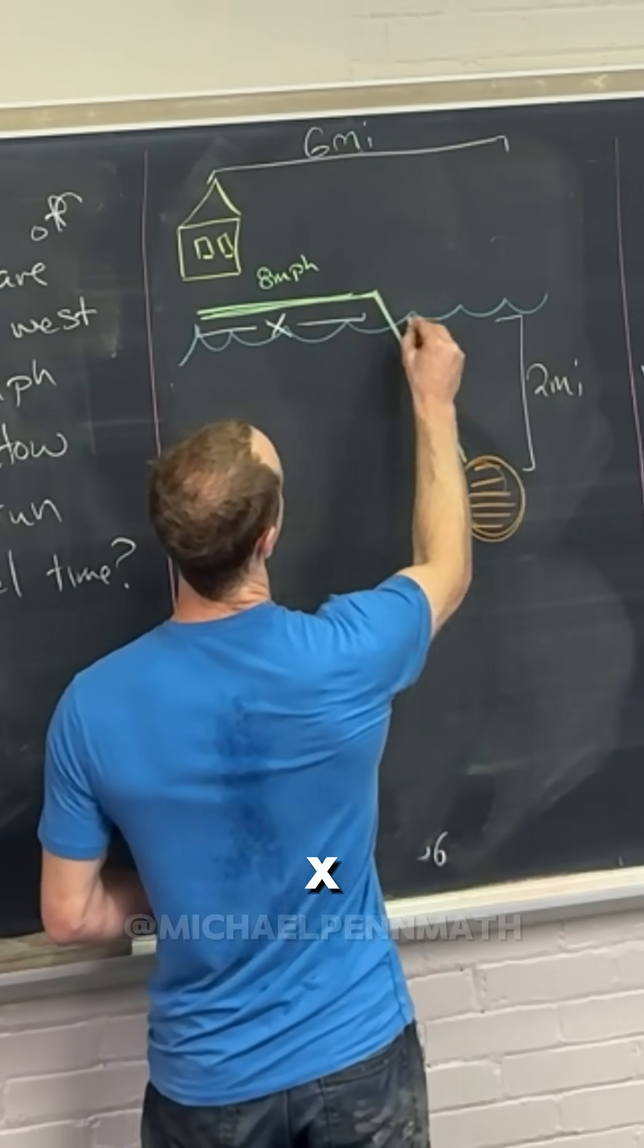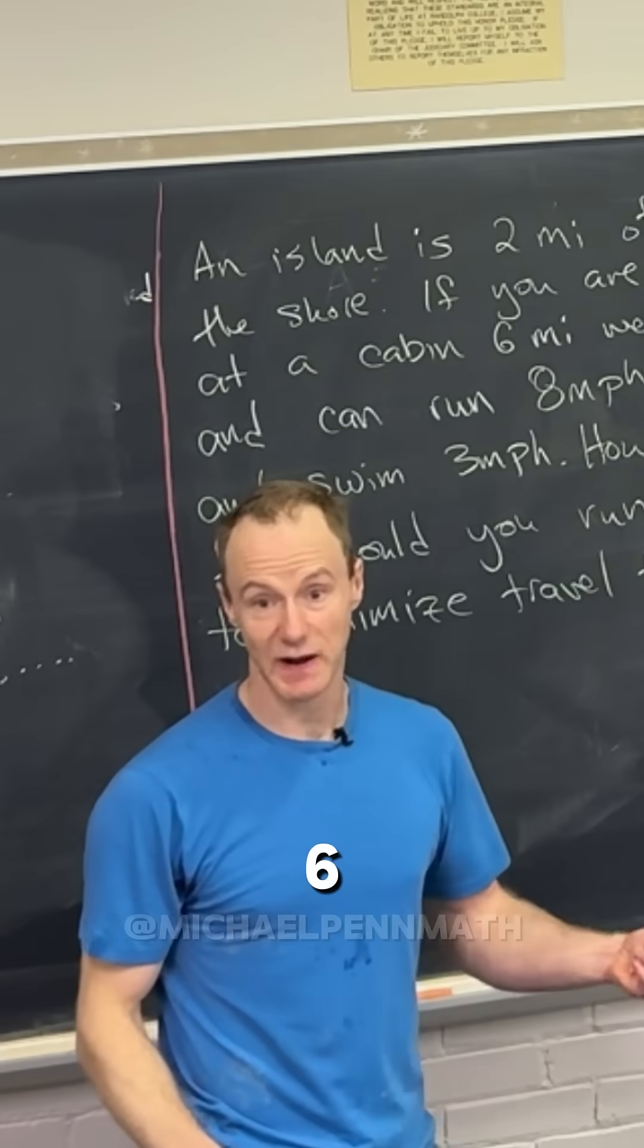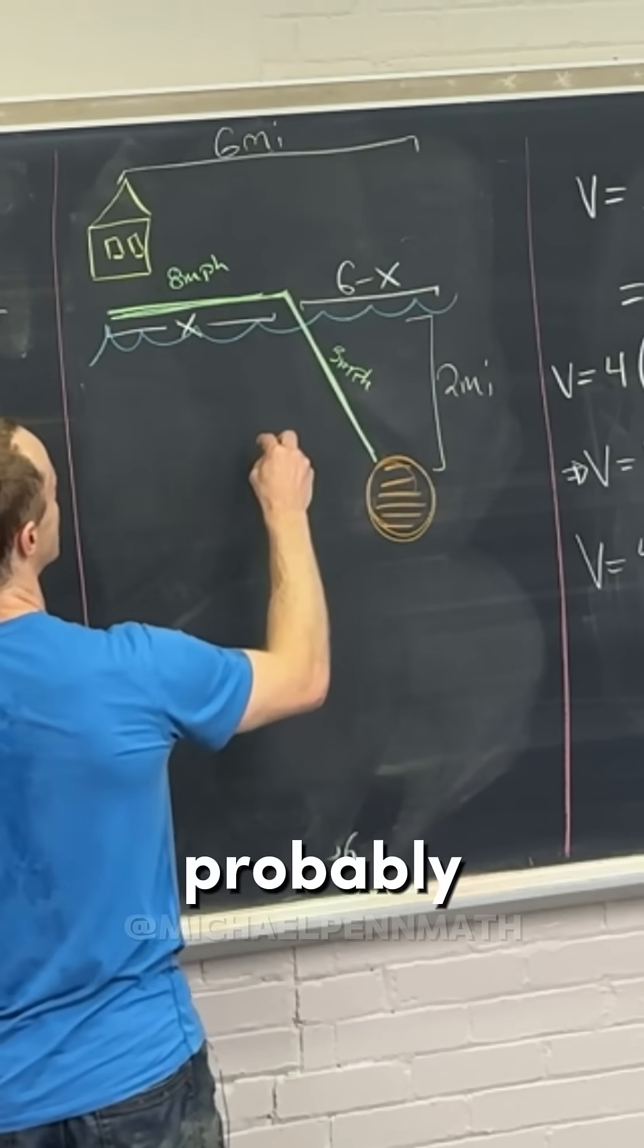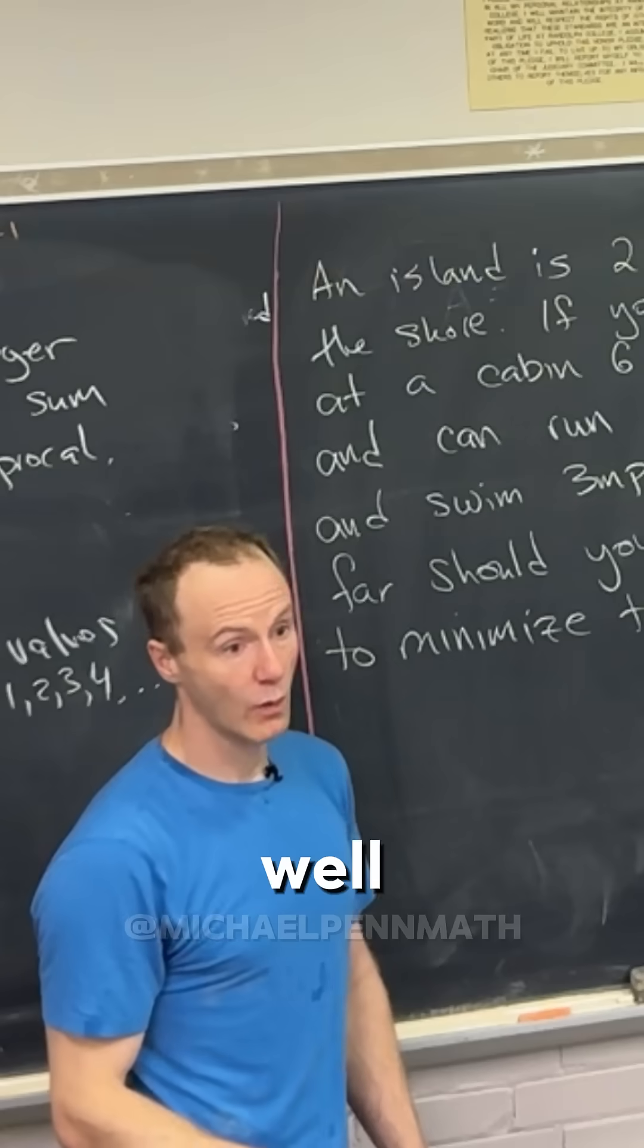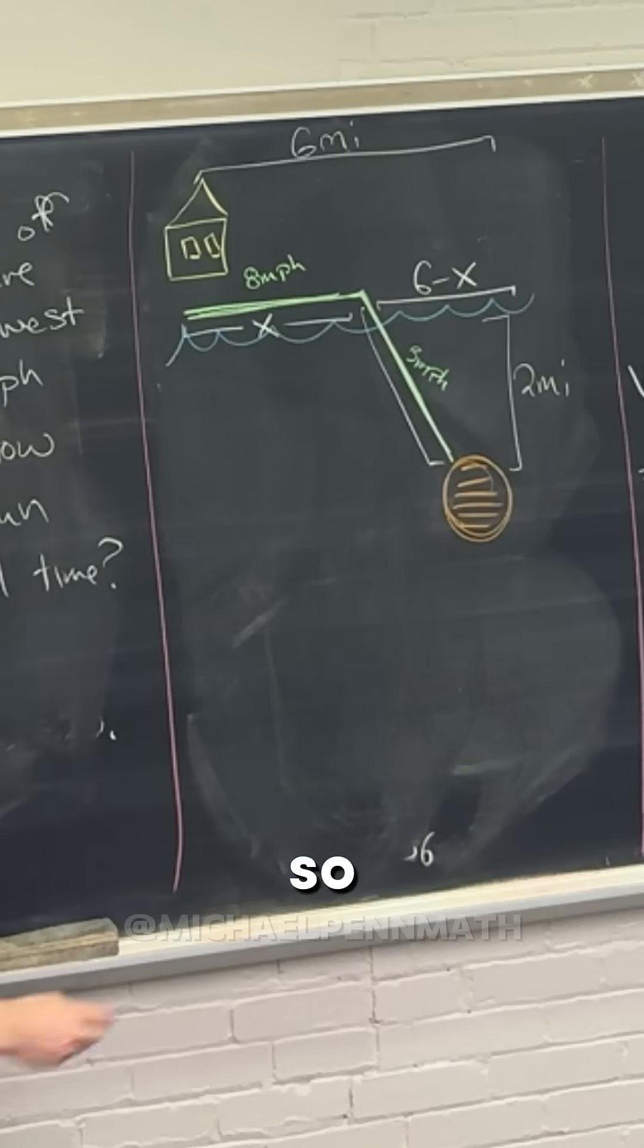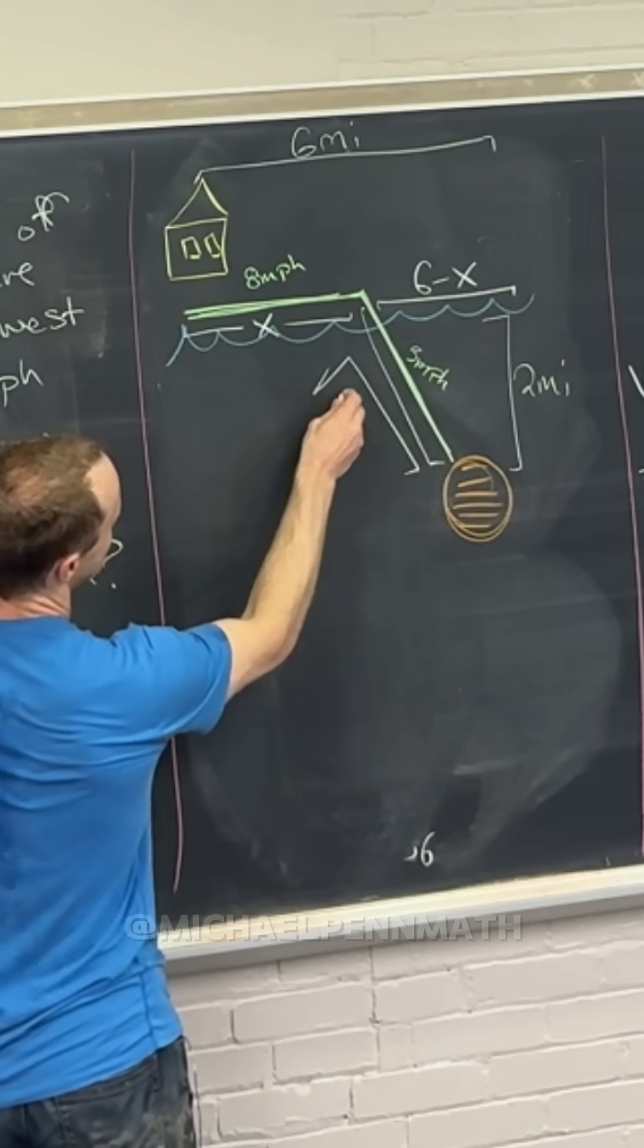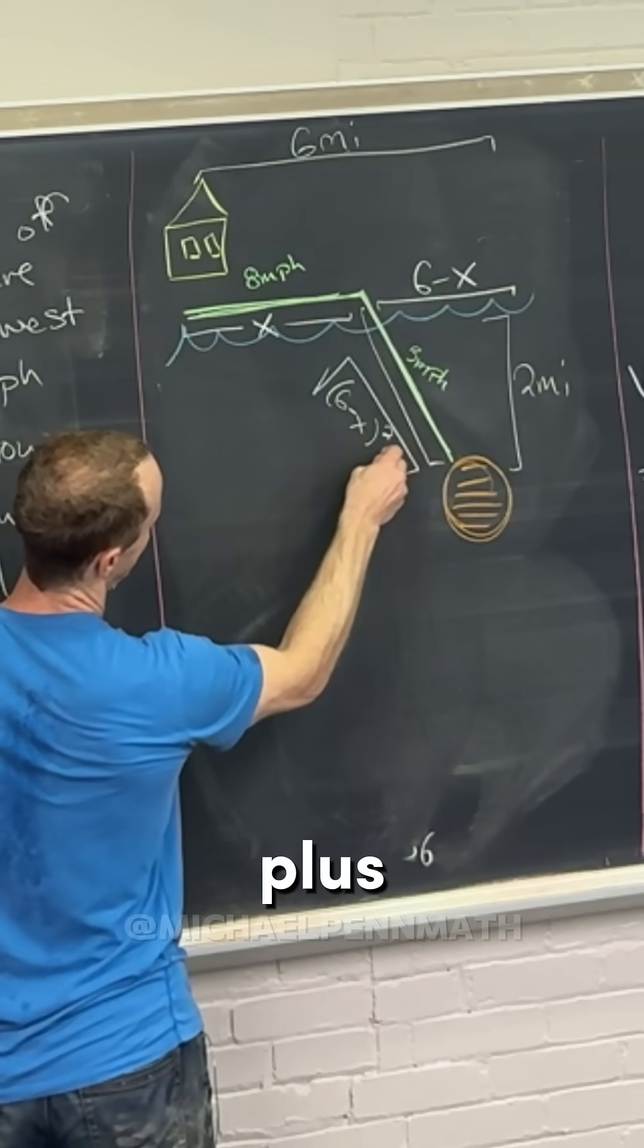If this is x, how far is this from here to here? That's going to be 6 minus x. Then, most importantly, how far is it from here to here? We can use the Pythagorean theorem, so this is going to be the square root of (6 minus x) squared plus 2 squared, which is 4.